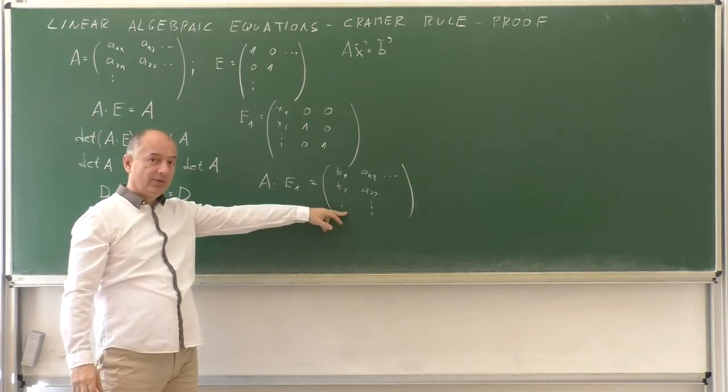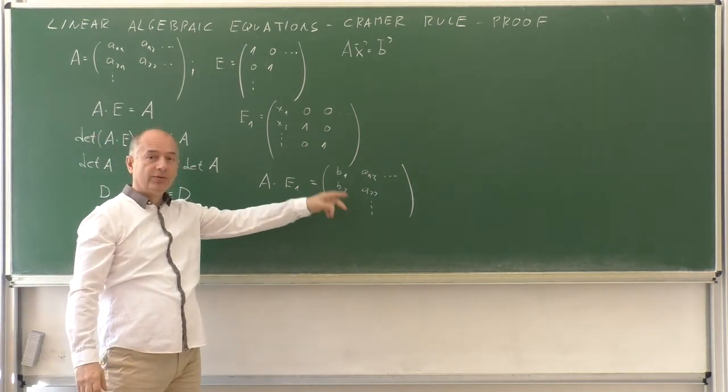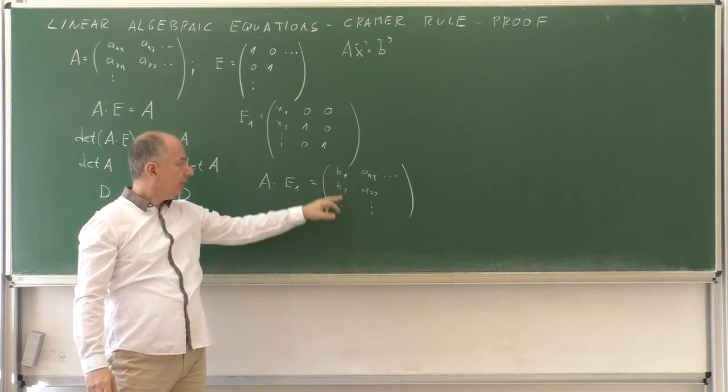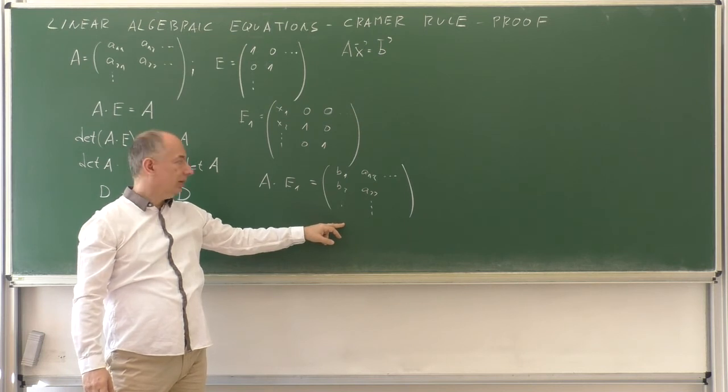Do you recognize this matrix? That's exactly the matrix from the Cramer's rule. We take the matrix A and we replace one column with the right hand side column.